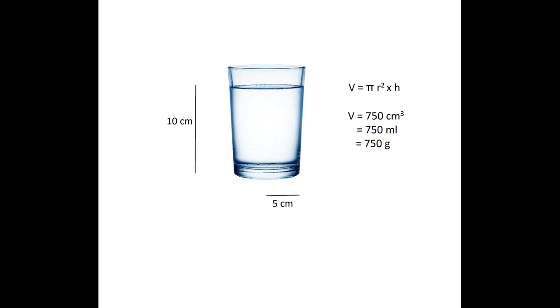The density of water is 1 gram per centimeter cubed, so we know that the mass of water in this glass is 750 grams.